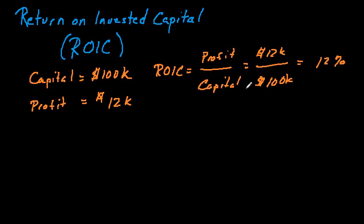The calculation does get a little more complicated for complex businesses, but the concept does not. Let's say this was an airline. An airline goes out and raises capital to buy assets — airplanes, buildings, facilities, and equipment. They use those assets to start an operation, and that operation generates some profit. To get the return on that capital, you simply take the profit divided by the money it took to get that operation going. The twelve percent is a measure of how efficiently the airline is using its capital to generate a profit.